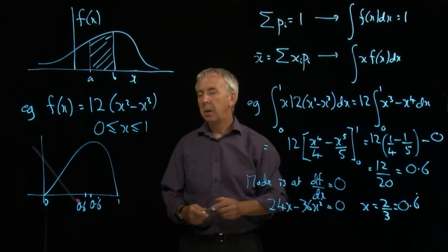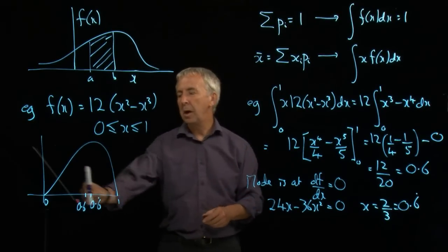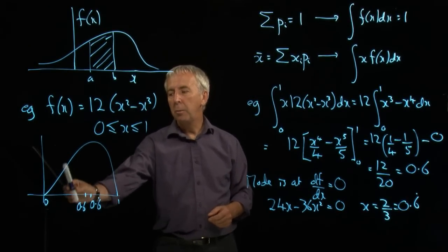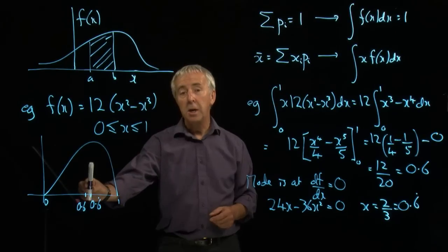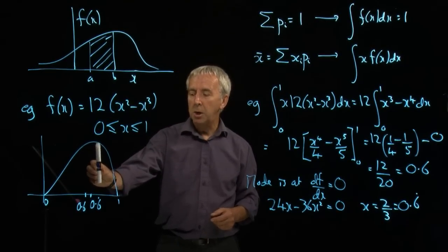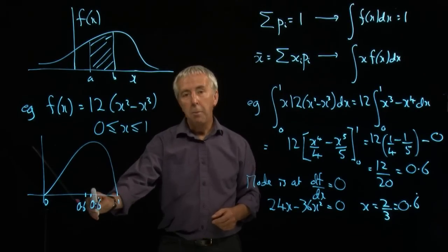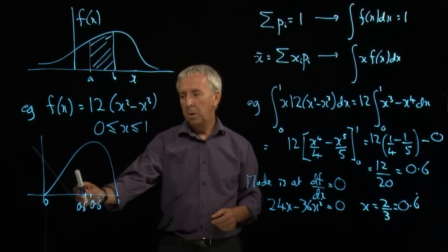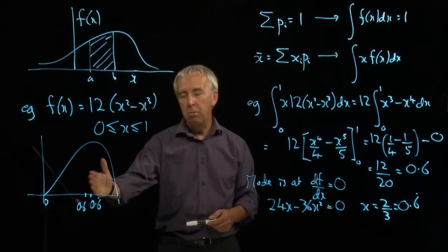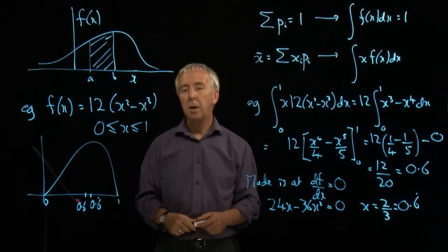And the median is a more complicated calculation. We have to integrate up to a value such that the probability of being below the median is a half. And so we get a calculation, an equation, in which the median is the upper limit of the integral. And that, again, will differ. You'll generally get three different results for the mean, median, and the mode.